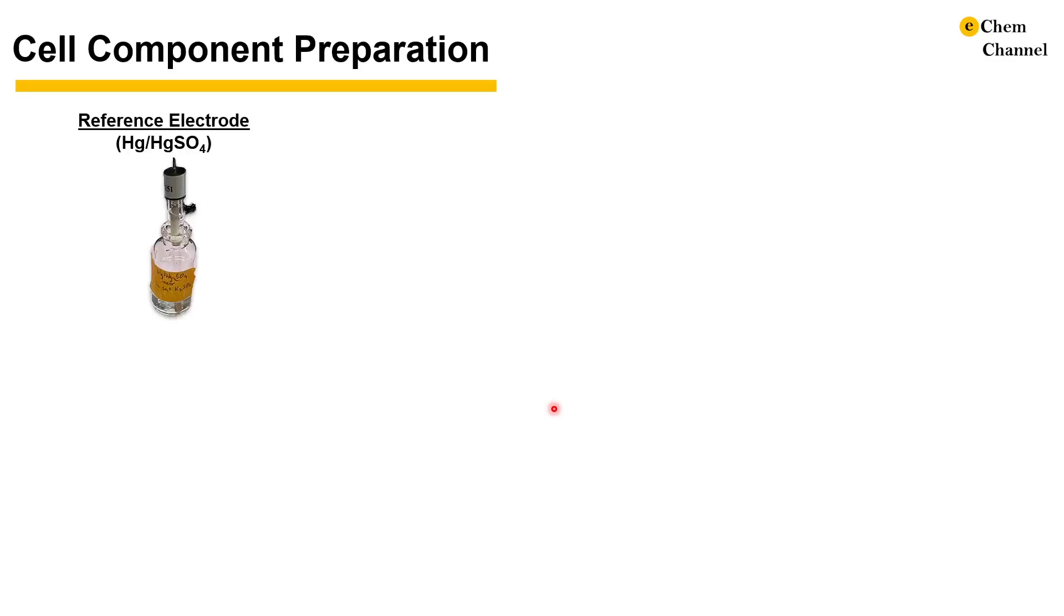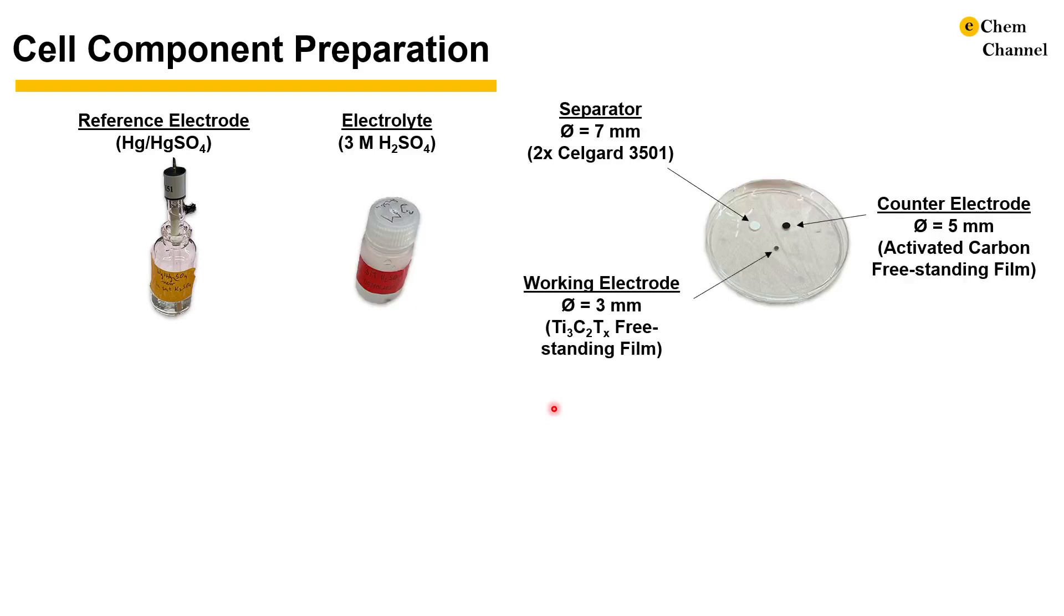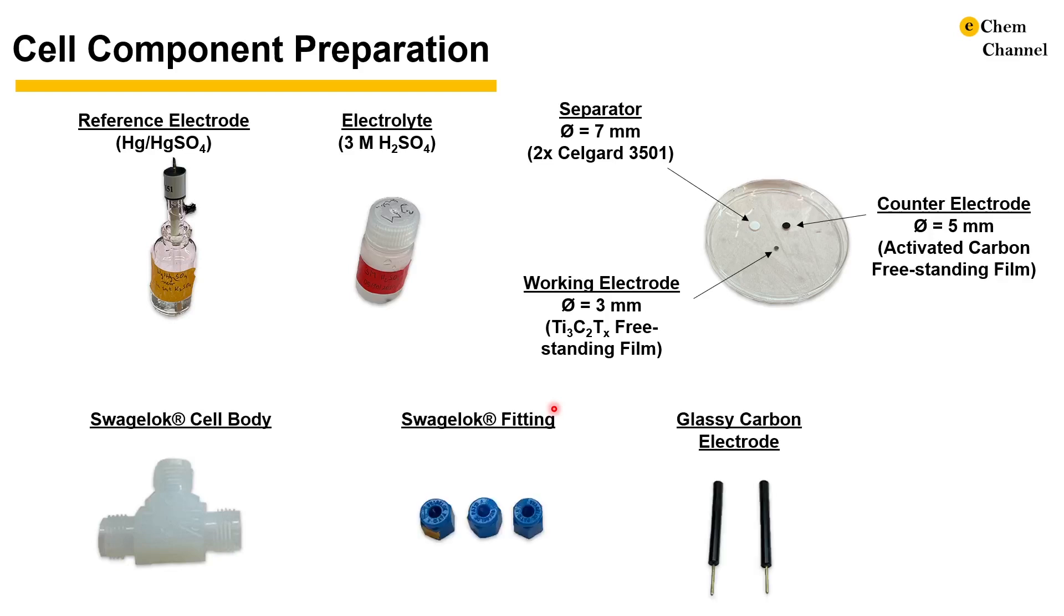For this experiment, we need the following chemicals and components prepared before the assembly. A reference electrode, a bottle of electrolyte, pieces of separators, a counter electrode, a working electrode, the swagelok cell body and fittings, glassy carbon electrodes that serve as the current collectors and gaskets to prevent leakage. There are a few consumables like pipettes and kimwipes that are not shown here but should be prepared as well. The specific components used in the following demonstration are listed in the parentheses.